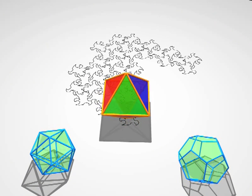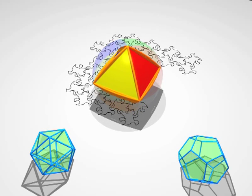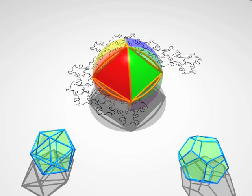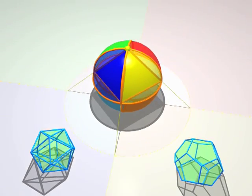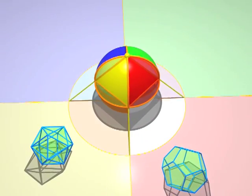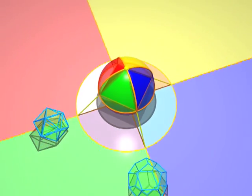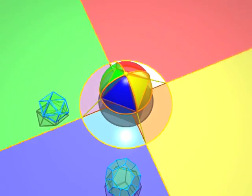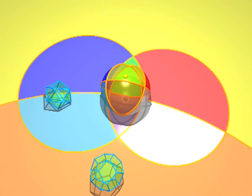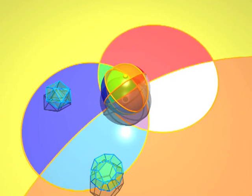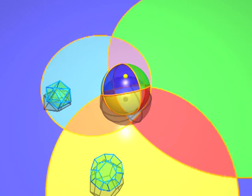And now, here comes an octahedron. Do you see the eight colored faces? Look how the projections of the edges are arcs of circles.